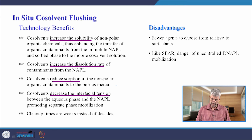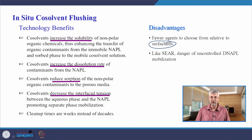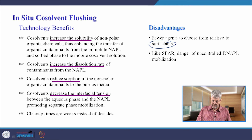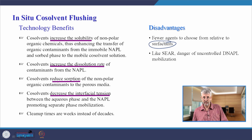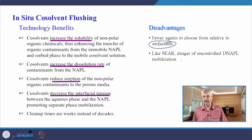A disadvantage relative to surfactants is that there are fewer co-solvents to select from. The list of surfactants is in the hundreds; co-solvents may be limited to a dozen. And again, as with surfactant-enhanced flushing, when dealing with mobilized DNAPLs, there is always the concern about these mobilized DNAPLs escaping your capture system and contaminating deeper parts of the aquifer, which is highly undesirable.